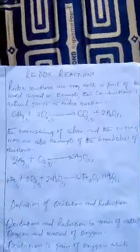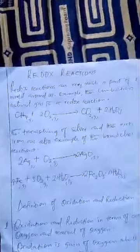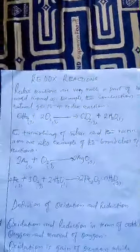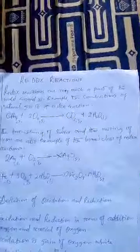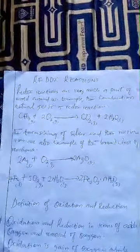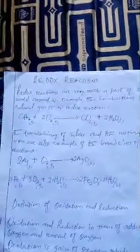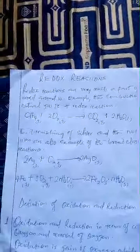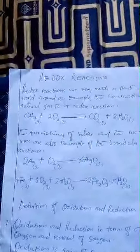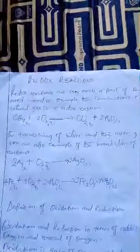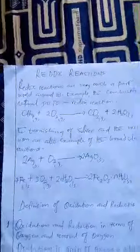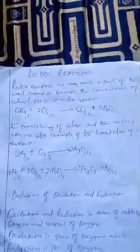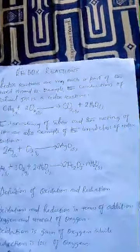Redox reactions are very much a part of the world around us. An example is the combustion of natural gas — when methane combines with oxygen to give us carbon dioxide and water, that is a redox reaction. The tarnishing of silver and the rusting of iron are also examples of this broad class of redox reactions.